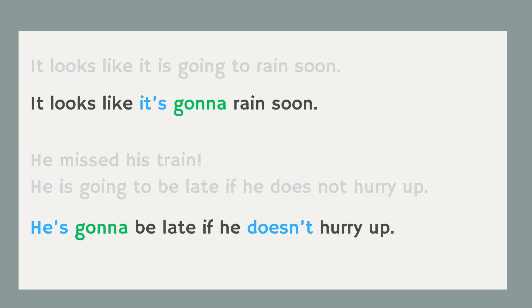For example: It looks like it's gonna rain soon. He missed his train — he's gonna be late if he doesn't hurry up.